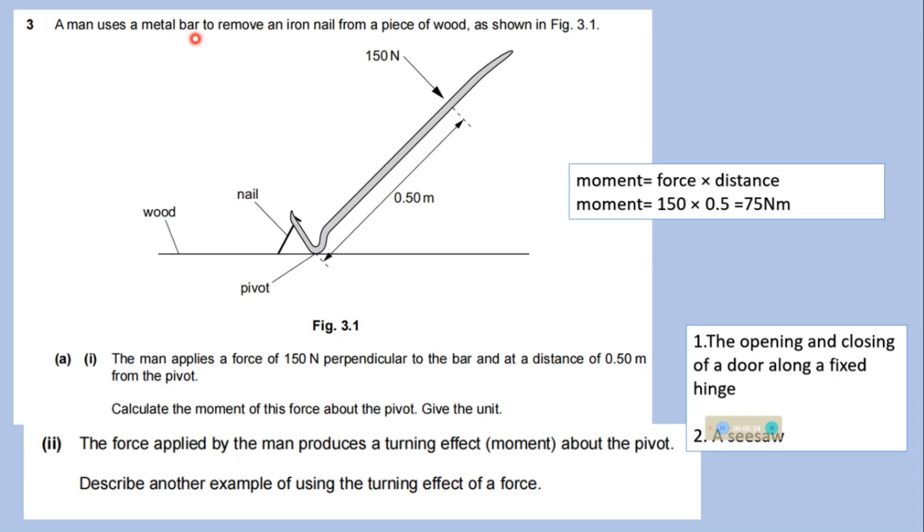A man uses a metal bar to remove an iron nail from a piece of wood as shown in this figure. This is a nail, this is a pivot, this is wood. And the man applies a force of 150 Newton perpendicular to the bar. The force is applied. This is perpendicular force. And at a distance 0.50 from the pivot. Calculate the movement of this force about the pivot. Give the unit.